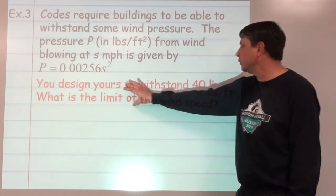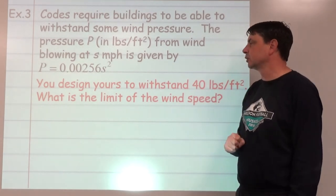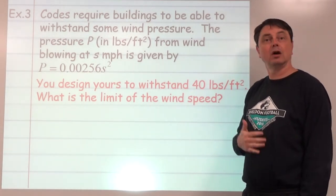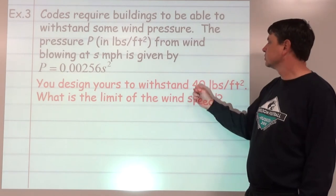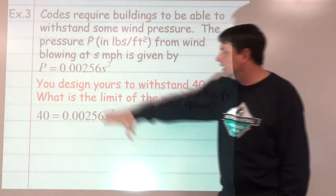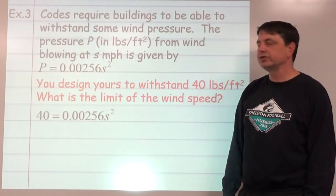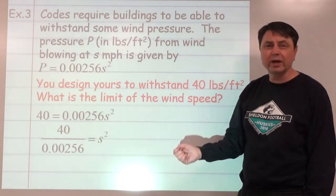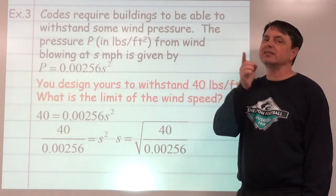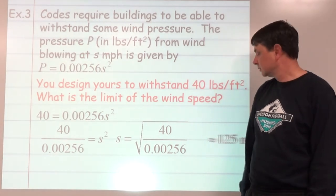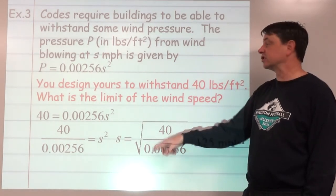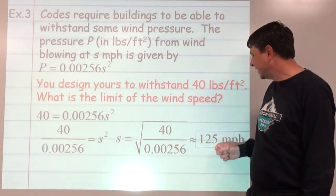Say if we're talking about the same problem, if we wanted to withstand 40 pounds per square foot—so twice as much—what about the wind speed? Is the wind speed going to be also twice as much? Well, let's see. So now our pressure is 40. We could put a 40 there. Same exact process for solving: we'll divide by 0.00256, square root both sides. We can put that into a calculator. It goes up, but it's not twice as much. It's because of the square root; it's actually the square root of 2 times as much, and it's about 125 miles per hour.